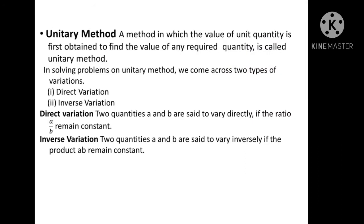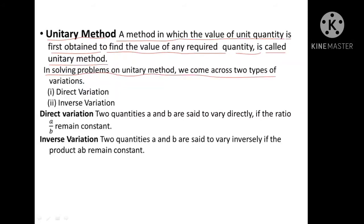First of all we have to know what is the unitary method. A method in which the value of a unit quantity — meaning one quantity — is first obtained to find the value of any required quantity is called the unitary method. Now, in solving problems on the unitary method, we come across two types of variation.